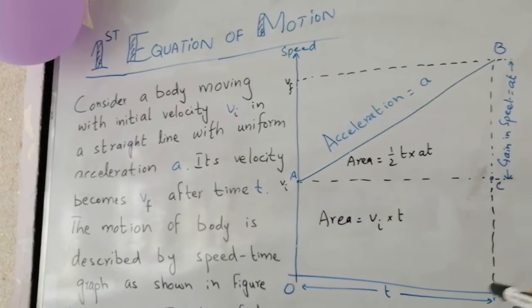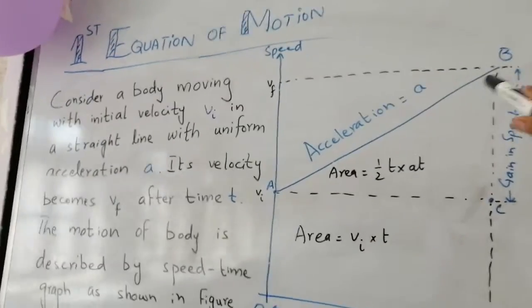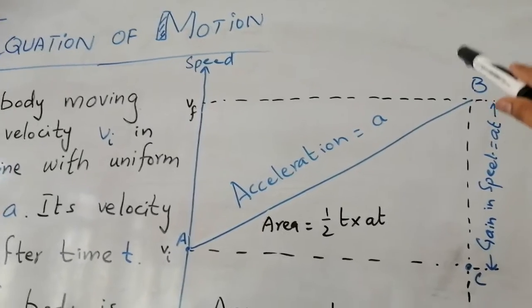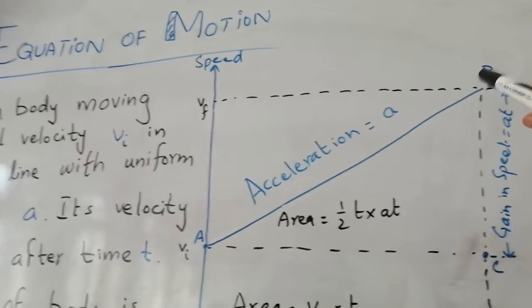After time t, the velocity becomes vf and that is at point B. At point B, the body attains a velocity vf.